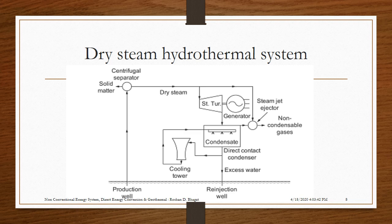Dry steam is passed to the turbine, which rotates the turbine blades. The shaft of the turbine is coupled to the generator, which generates electricity. The steam condenser condenses the steam coming out of the turbine by using cold water to absorb the heat. A cooling tower cools the water used in the condenser. Excess water is sent back to the injection well. The steam jet ejector separates out non-condensable gases.